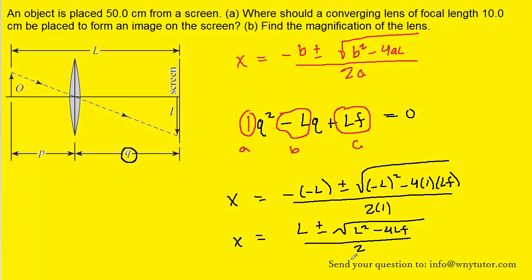At this point we can plug in the known values. Remember that L was the distance from the screen to the object. And that was given as 50 centimeters. And then F was the focal length of this lens. And that was given to us as 10 centimeters. So let's plug those values in.